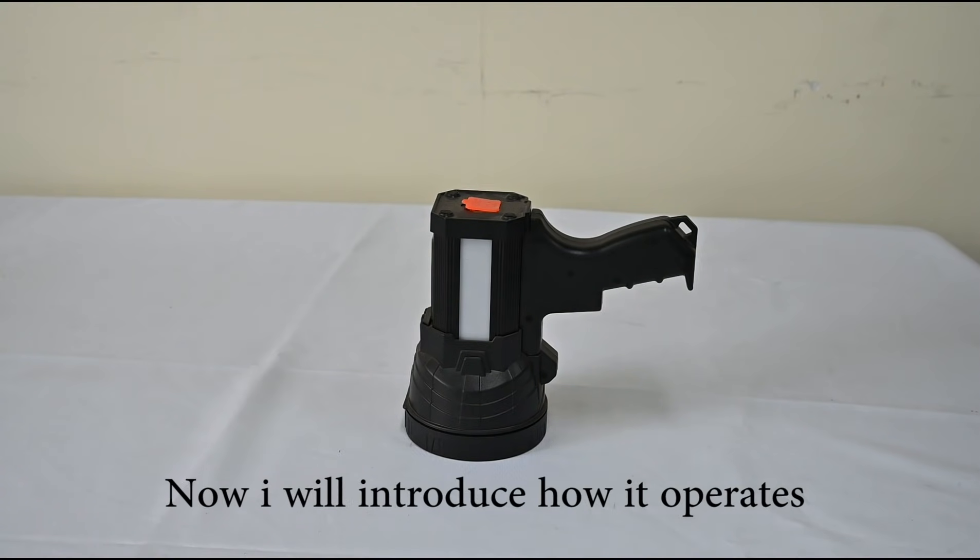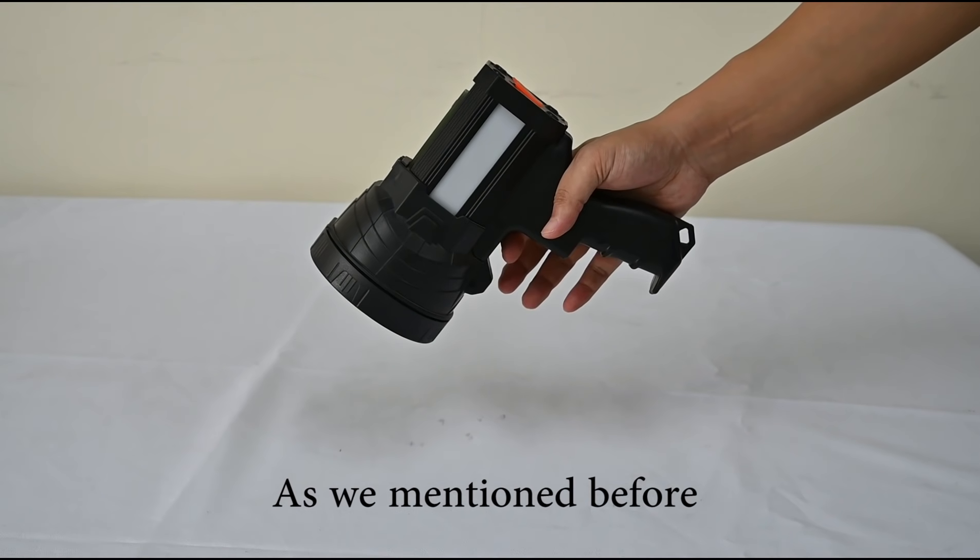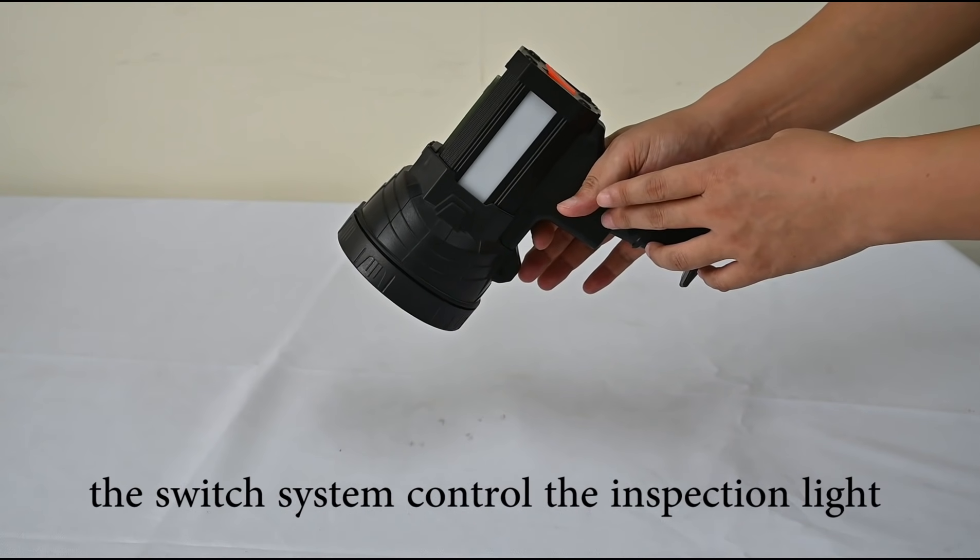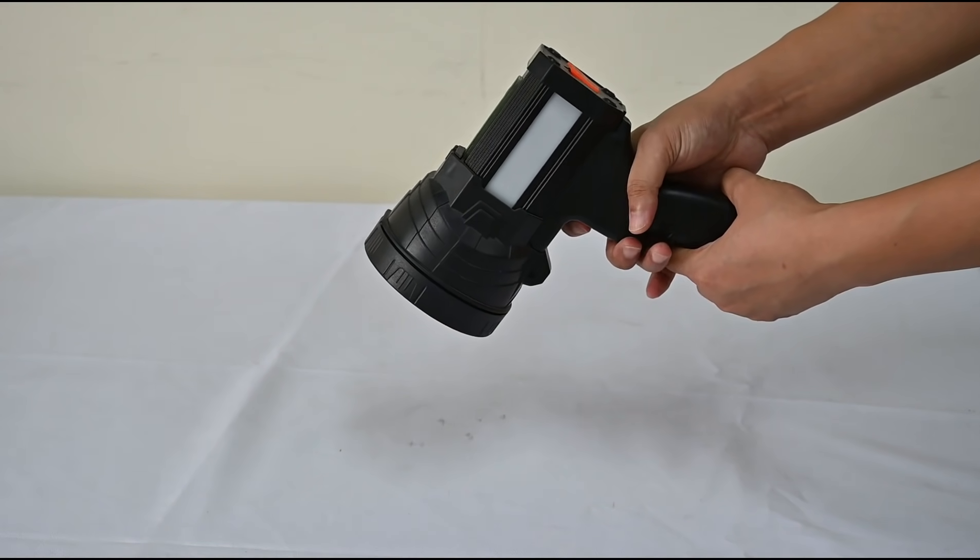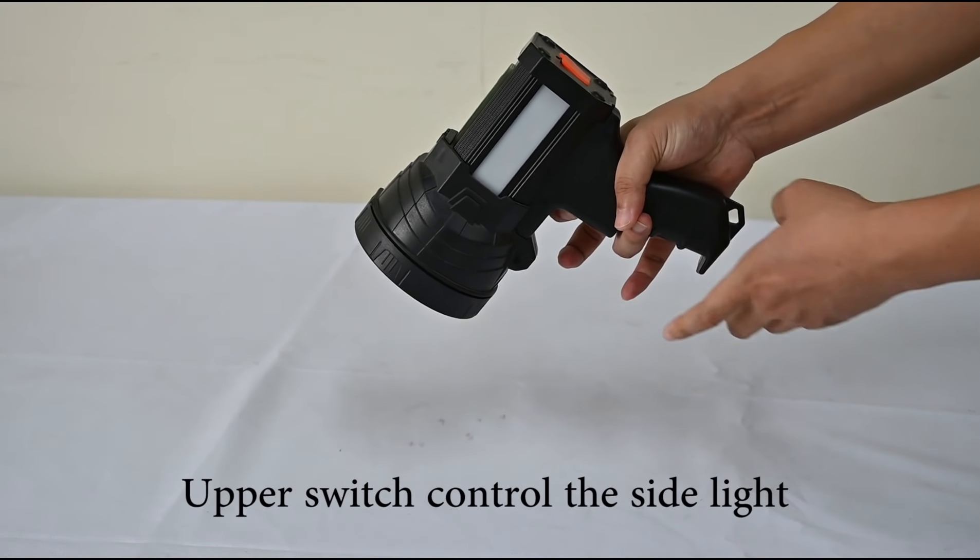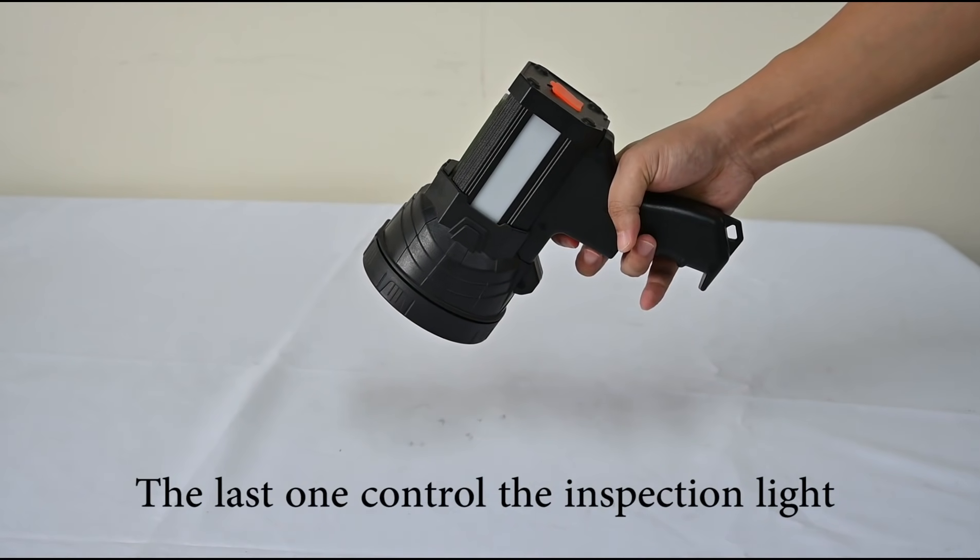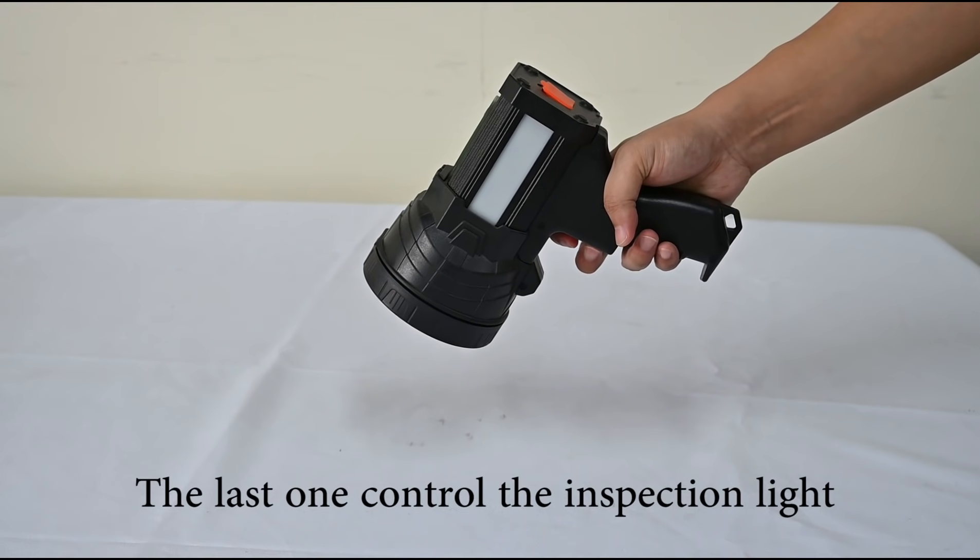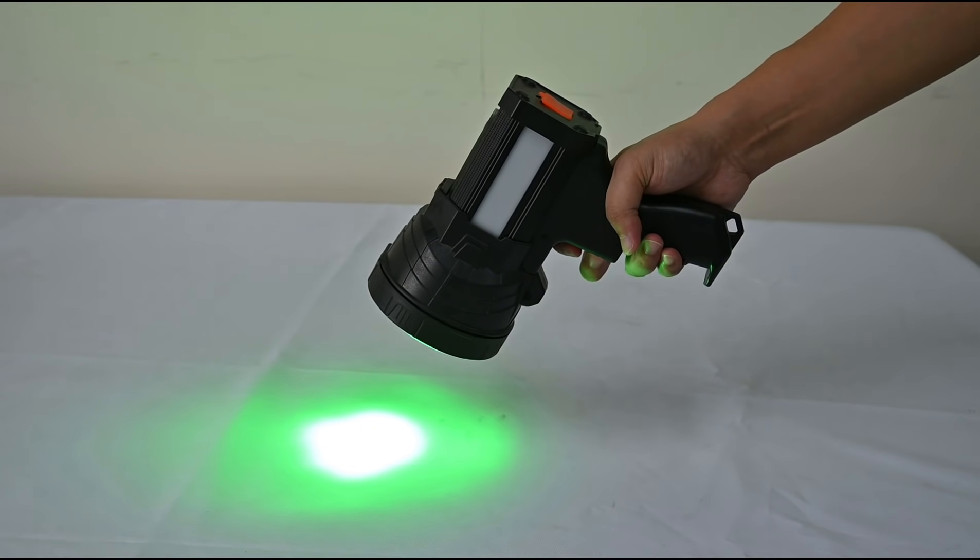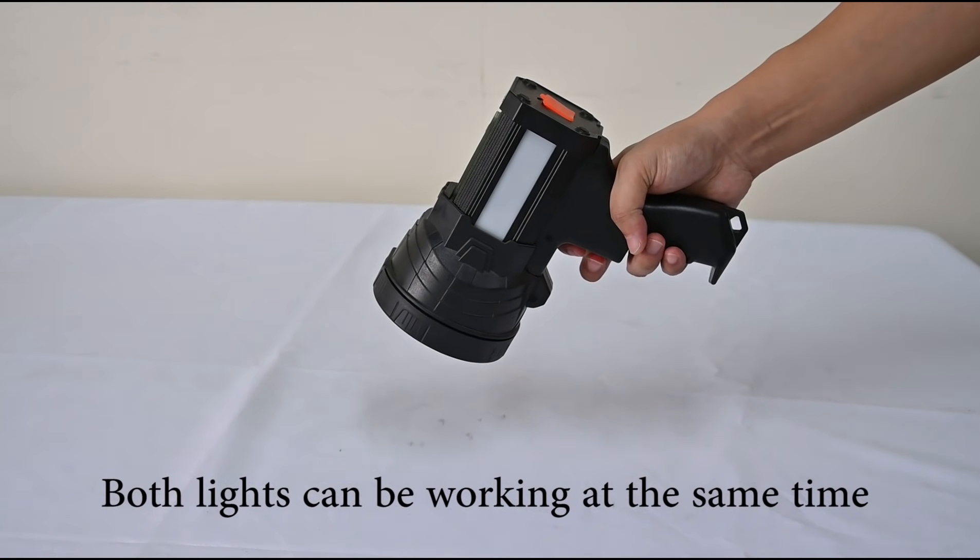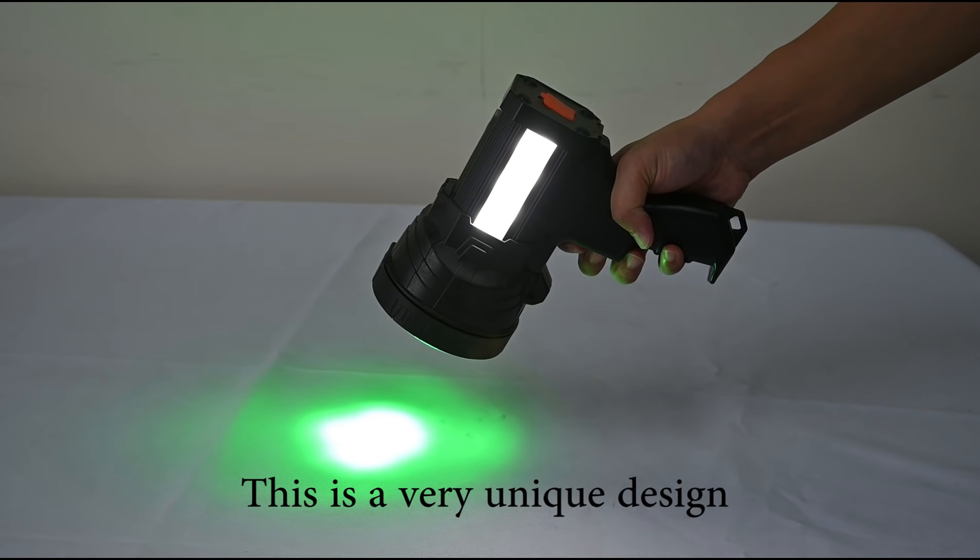Now I will introduce how it operates. As we mentioned before, the switch system controls the inspection light and the satellite. And the last one controls the inspection light. Both lights could be working at the same time. This is a very unique design.